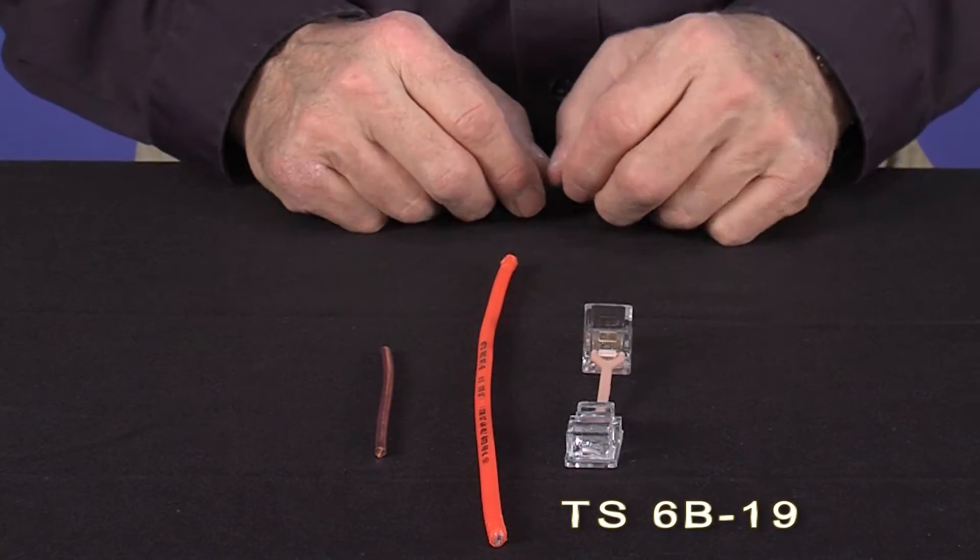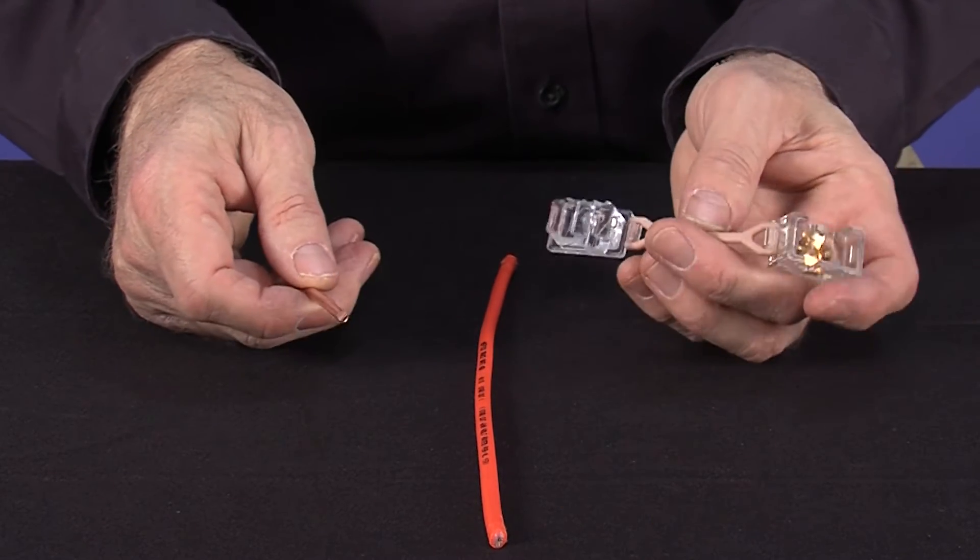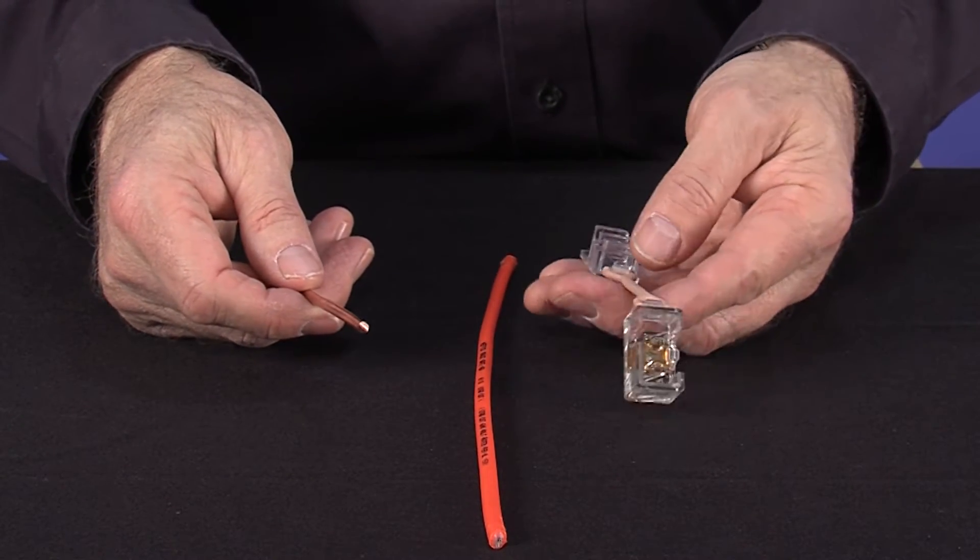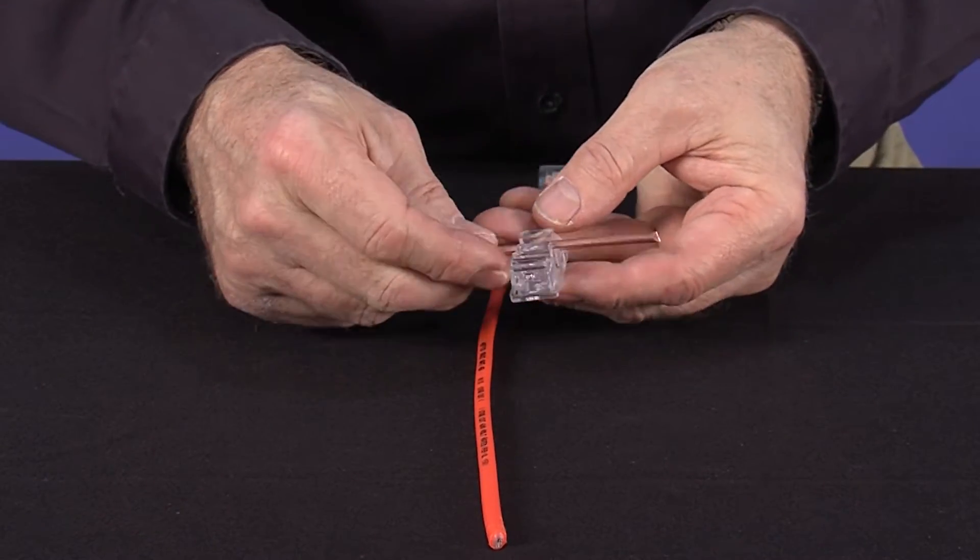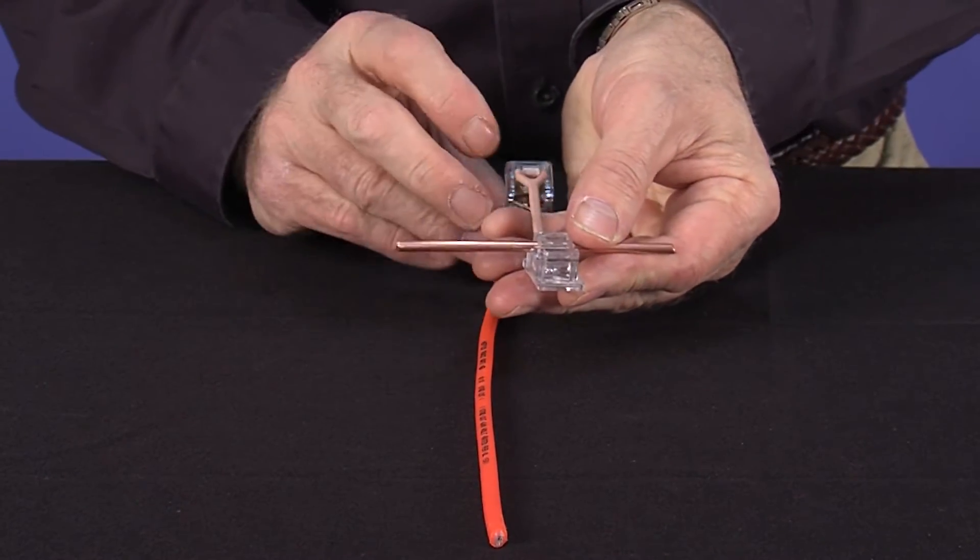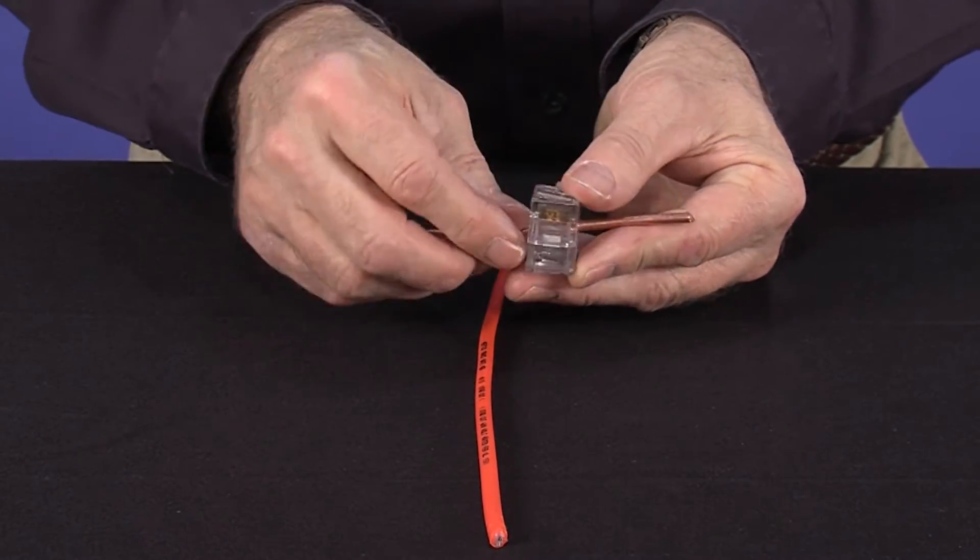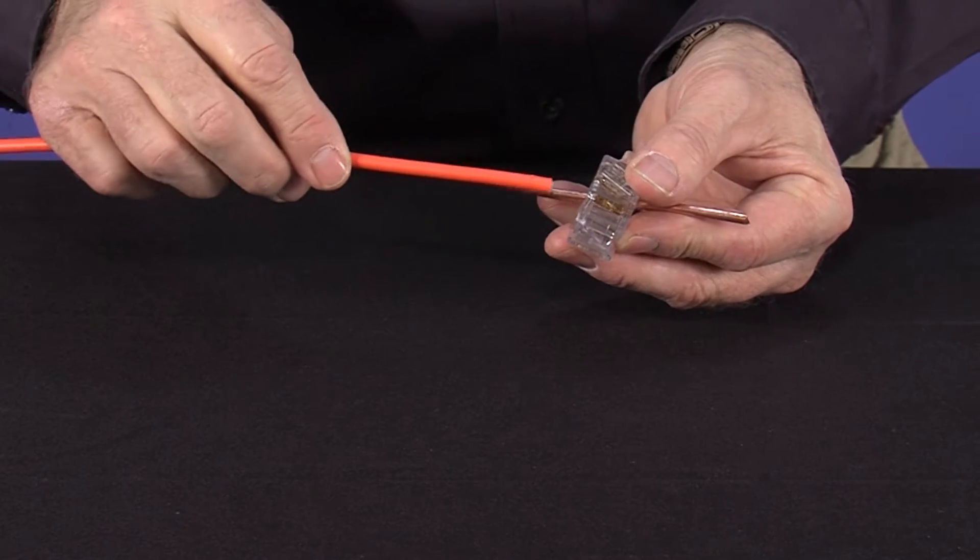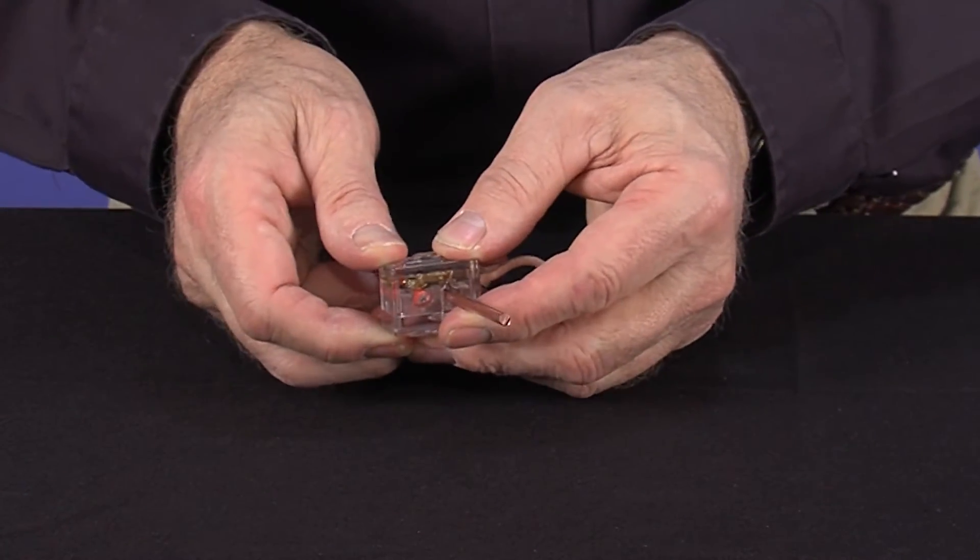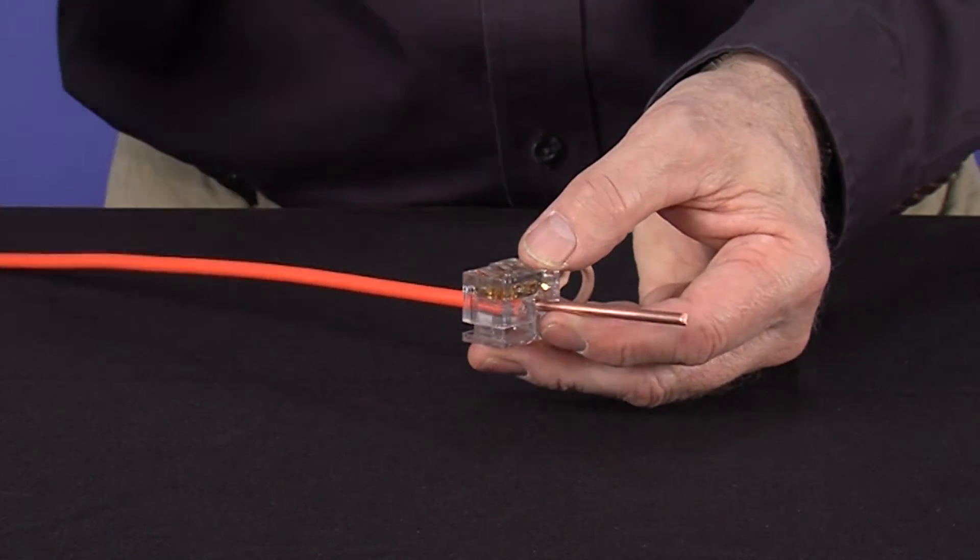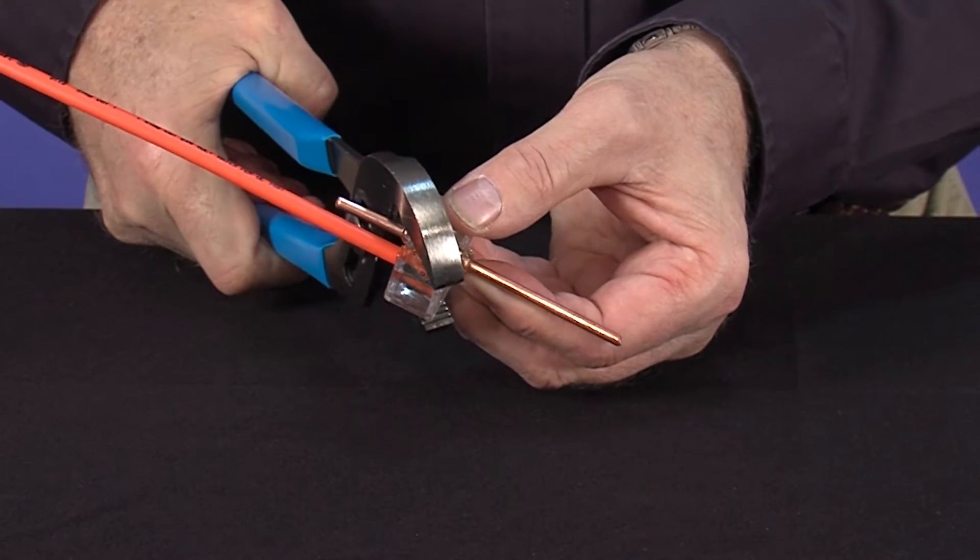First, I'll demonstrate the assembly of the TS-6B-19 connector. In use, you'll have a 6-gauge wire in place either on a pole or in a central office. You simply take the connector, place the 6-gauge wire in the back slot. Partially close the top. Slide TraceSafe all the way in until it hits the back. Take your channel locks, and close it tight.